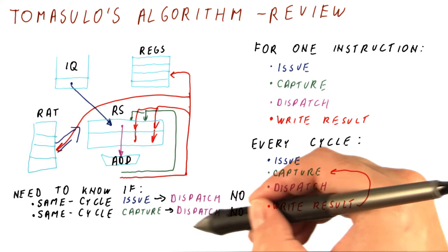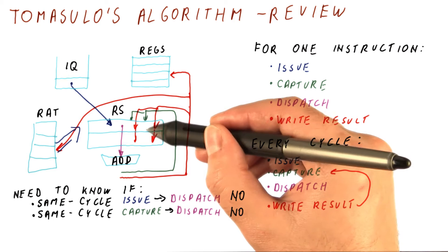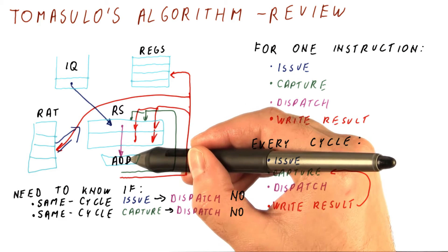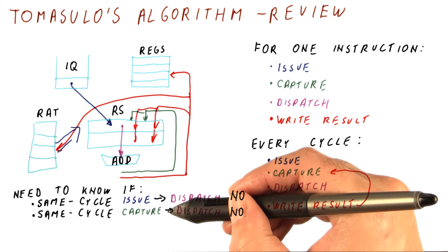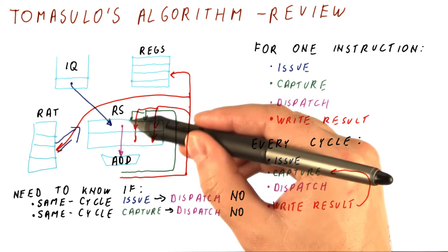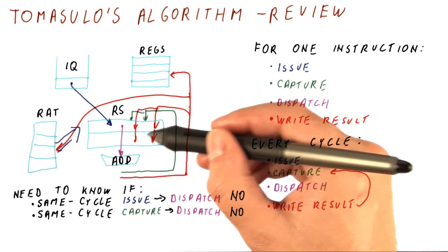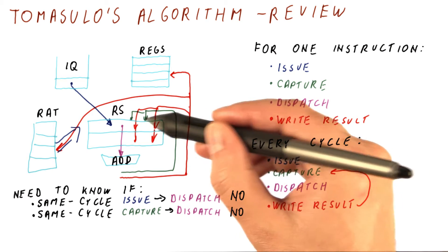And next cycle, this reservation station looks like it's something that might dispatch. But it is, again, possible to capture operands and consider this instruction for dispatch. It just needs more hardware for that.